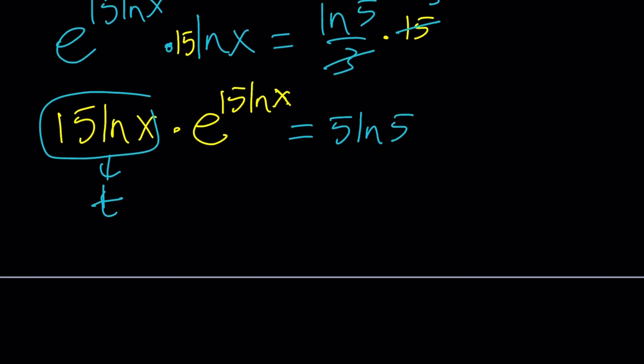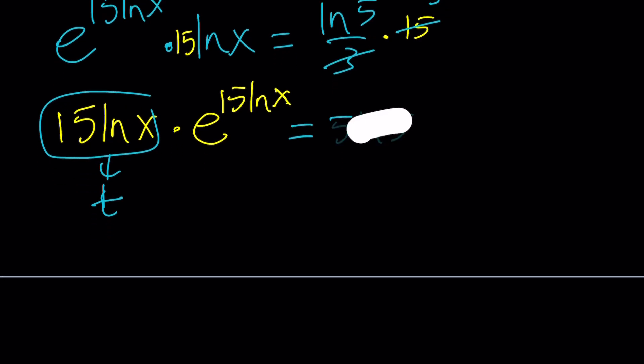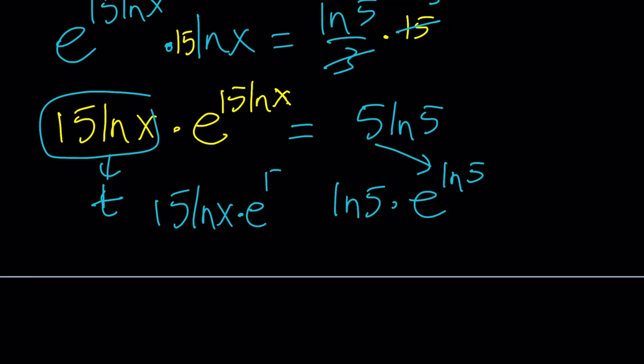Okay, if you apply Lambert's W function, or maybe I can simplify the right-hand side as well. So maybe write it as, instead of 5 ln 5, I can kind of maybe turn it into ln 5 times e to the power of ln 5. That was easy, right? Just turn the 5 into this. And now I have 15 ln x times e to the power of 15 ln x.